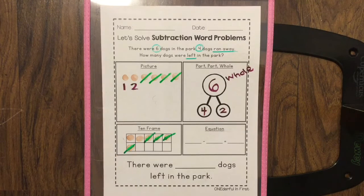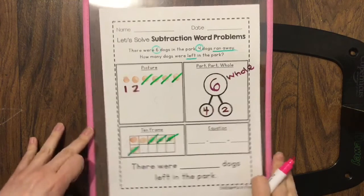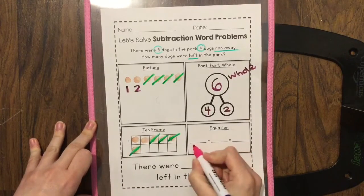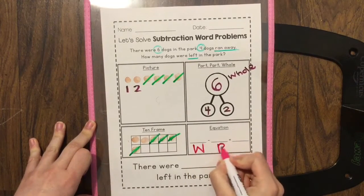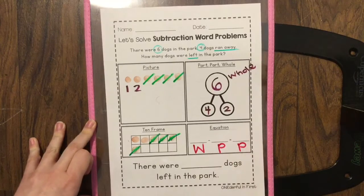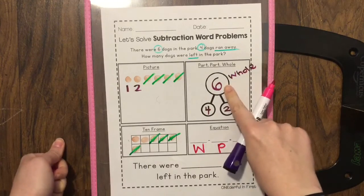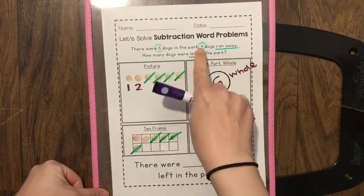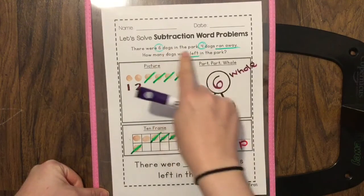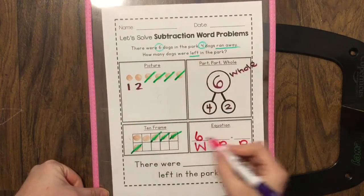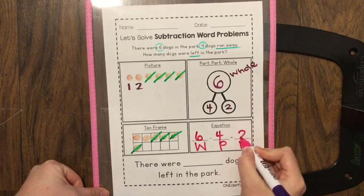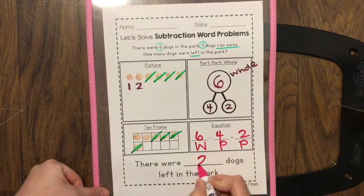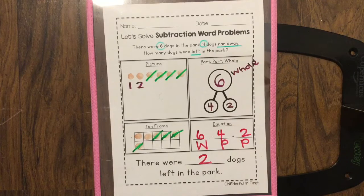Now my equation is a subtraction equation. So I know that I'm going to have whole minus part equals another part. My whole number I know from my number bond is six. Six minus how many dogs ran away? Four dogs ran away. Six minus four equals two. There were two dogs left in the park.